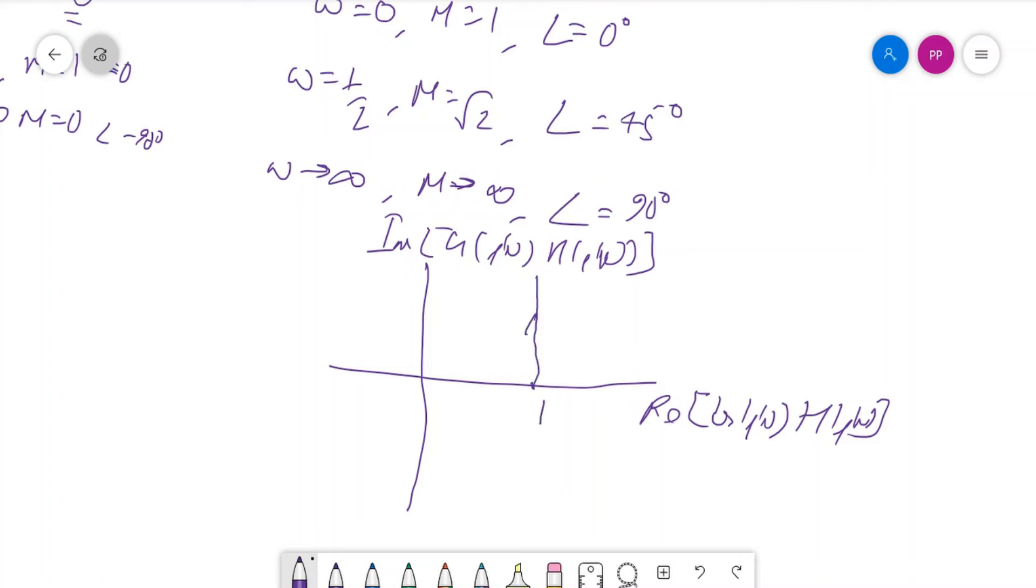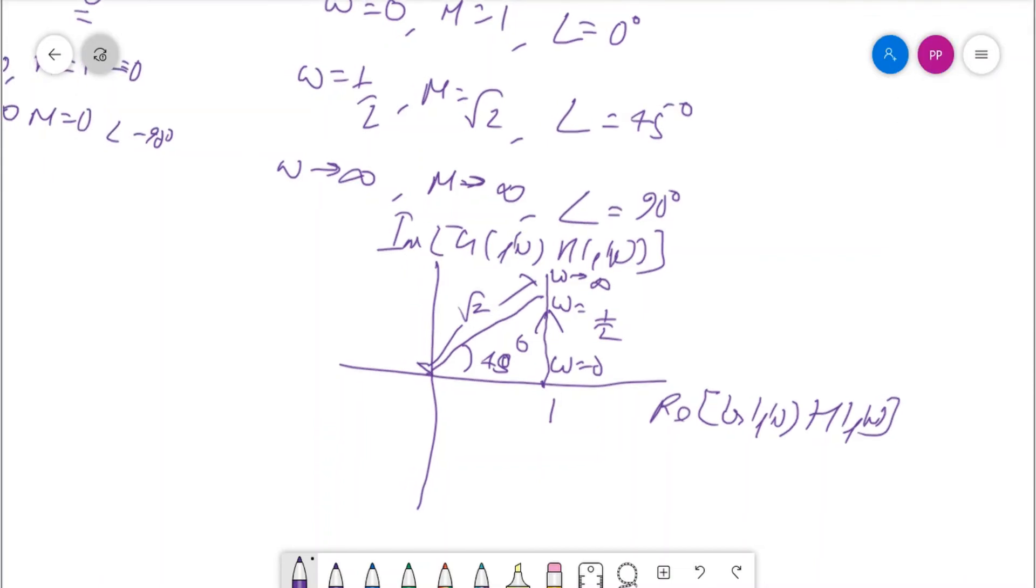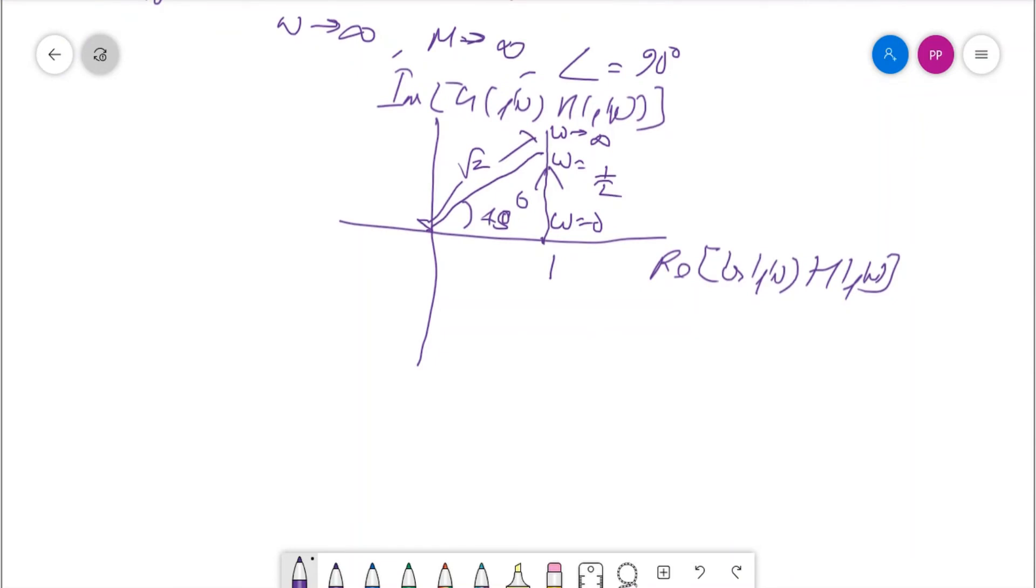We should be getting the constant real part, this is 1, and imaginary part is a straight line with this arrow starting from ω equal to 0 up to ω tends to infinity. In between there is at 45 degrees we have ω equals to 1/τ, and this magnitude is √2. This is the inverse polar plot of 1/(τs+1).